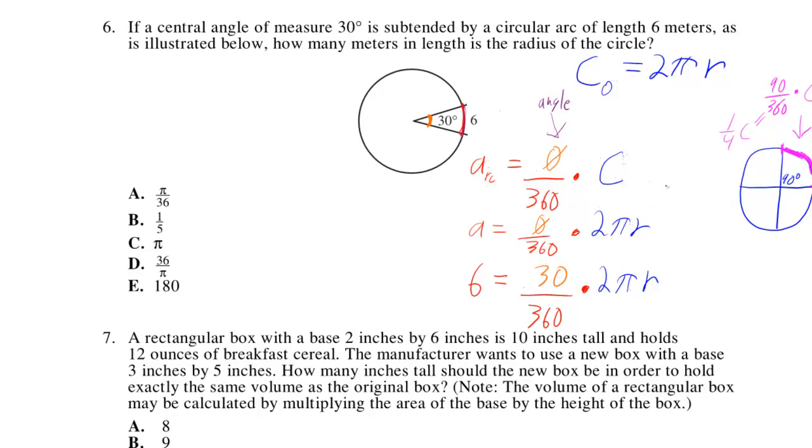Now if this formula doesn't make sense to you, think about a circle that's cut into four pieces, where obviously the arc is going to be one-fourth of the entire circumference. But one way you could have gotten that was by doing 90 out of the 360 is going to be one-fourth of the circumference.